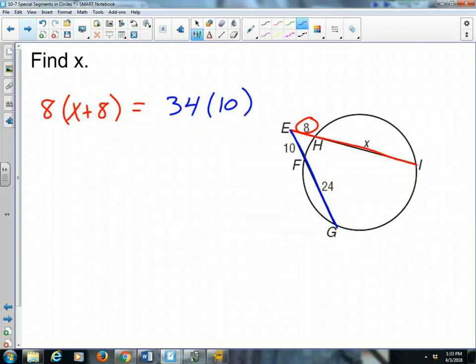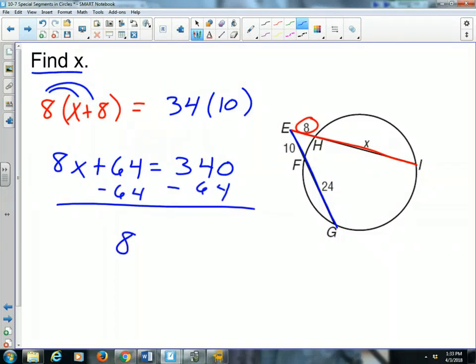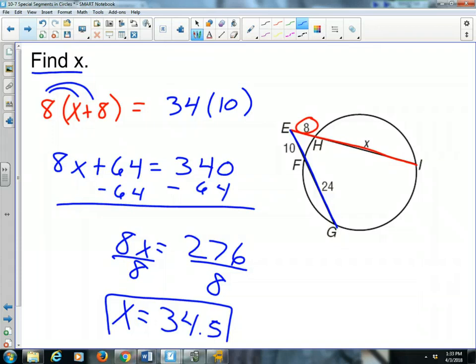Now we're going to solve for x, and that's our instructions here is to find x. So we multiply by distributing 8x plus 64, that equals 340, and then we are going to subtract 64 from both sides. So we get 8x equals 340 minus 64 is 276, and then finally divide both sides by 8, and we got x by itself. 276 divided by 8 is 34 and a half, 34.5.